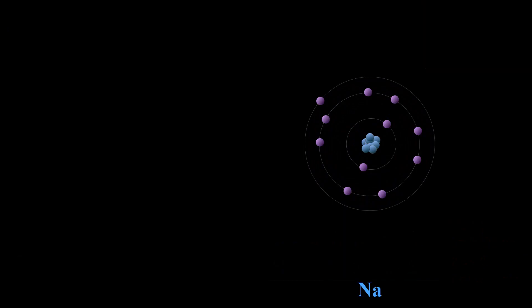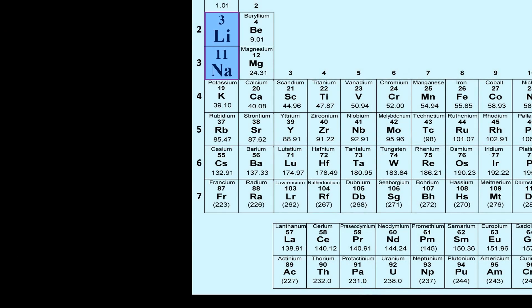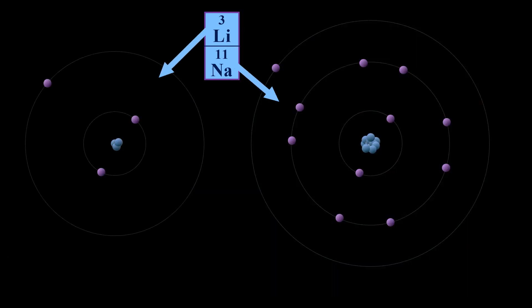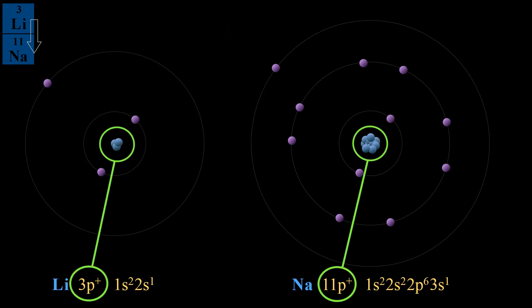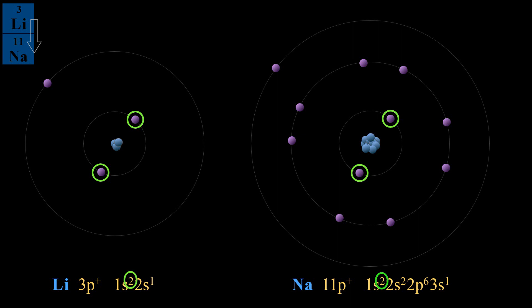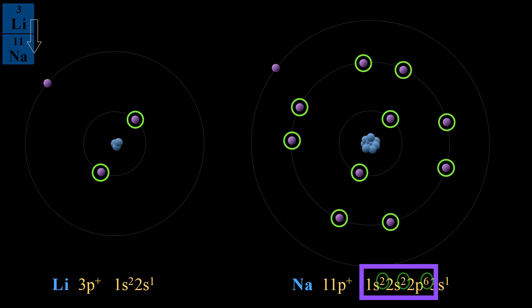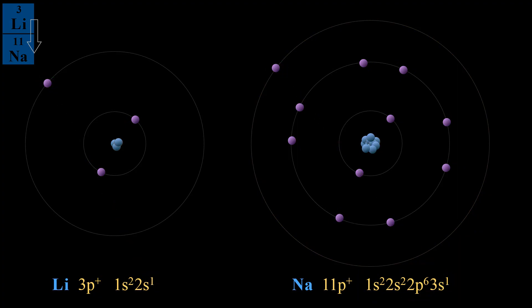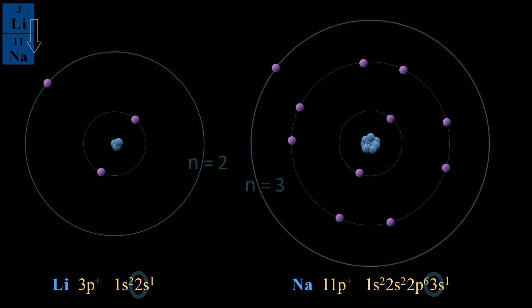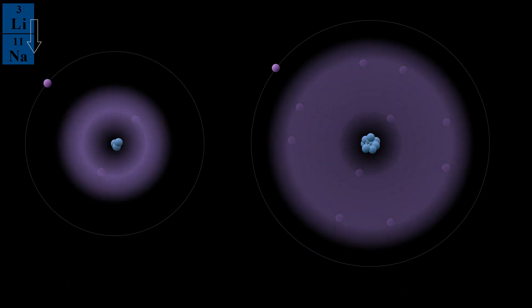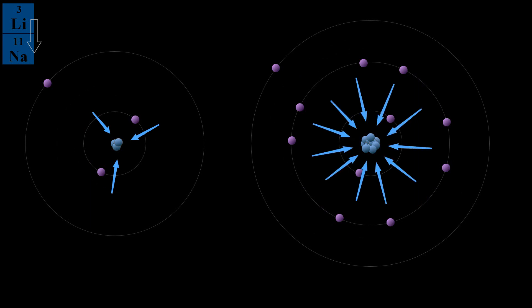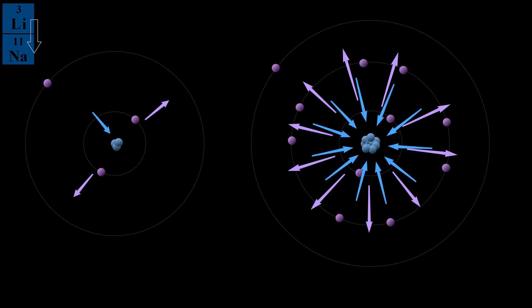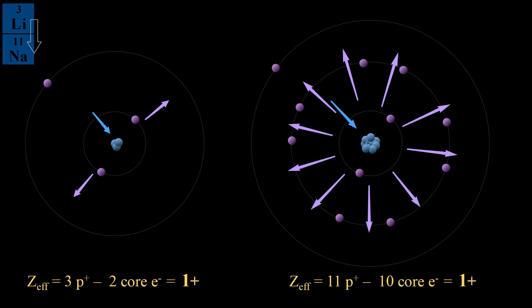Now let's take a look at atoms in the same group. Let's compare sodium to lithium going down the alkali metals, examining shielding, Zeff, and resulting properties. Lithium has 3 positive charges; sodium has 11. Lithium has 2 shielding electrons, but sodium has 10 due to the added valence shell, and both have 1 valence electron. Sodium's valence electron is in a higher principal energy level and is being repelled by 10 core electrons instead of 2, so that single valence electron is further from the nucleus and the radius of sodium is larger. Interestingly, the effective nuclear charge for both lithium and sodium is 1: 3 protons minus 2 core electrons, and 11 protons minus 10 core electrons, both give a Zeff of 1.